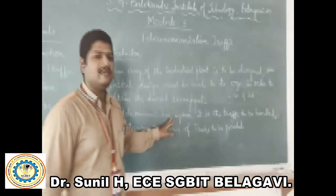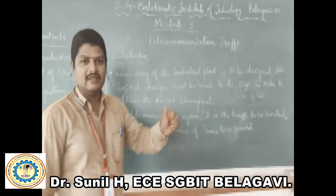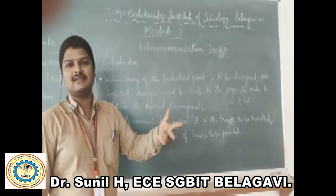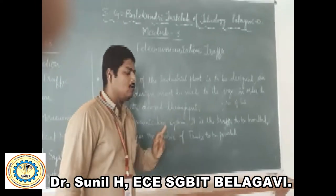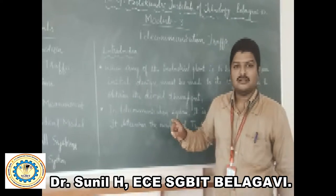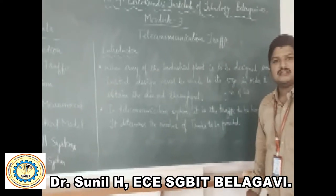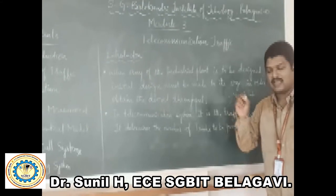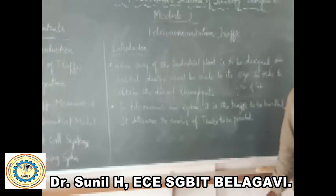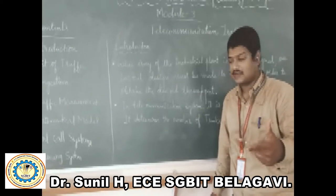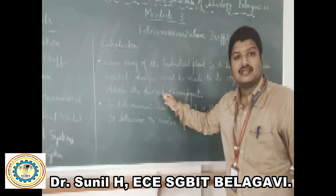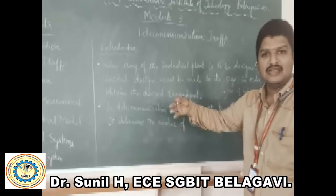These two parameters play a very important role in Telecommunication Traffic: one is size, and with respect to size, we need to focus on how many subscribers are going to get the facilities, and how traffic is to be handled. Based on these parameters, it obtains the desired throughput. If any industrial plant is to be designed, we need to focus on three parameters: size, number of customers or subscribers, and how traffic is to be handled.